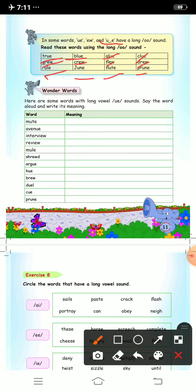Now here are some words with long u sounds. Say the words aloud and write its meaning. You have to write these words in your notebook. The words are mute, avenue, interview, review, mule, shrewd, argue, hue, brew, duel, cue, and prune.